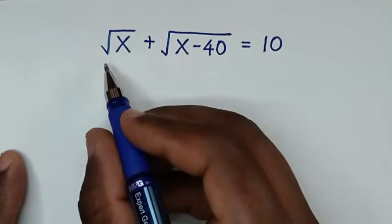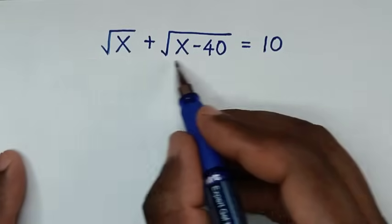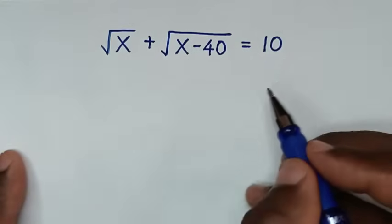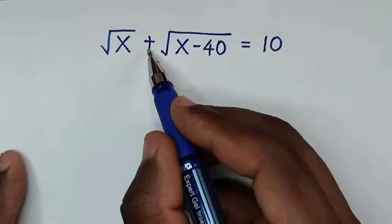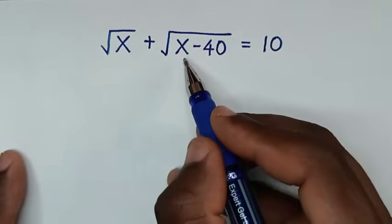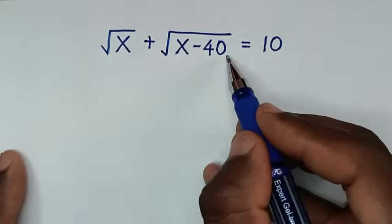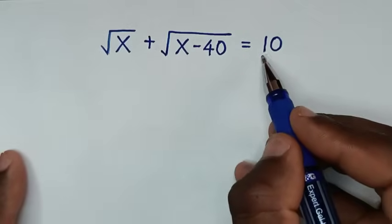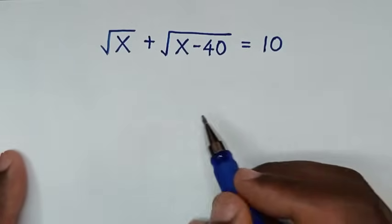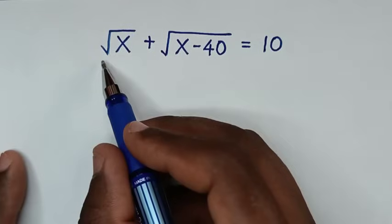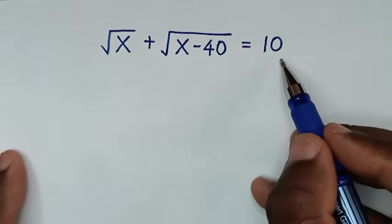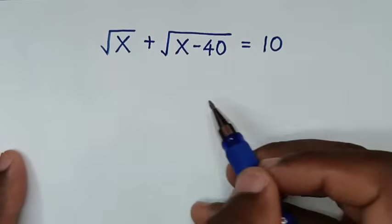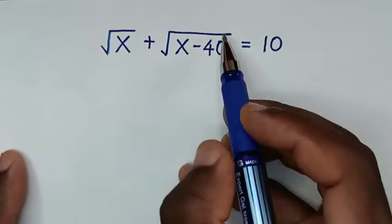Hello, you are welcome to solve this math problem, which is: square root of x plus square root of x minus 40 is equal to 10. We need to find the value of x from this equation.